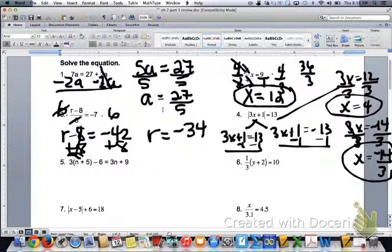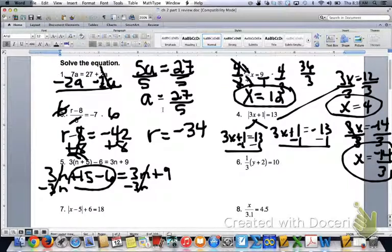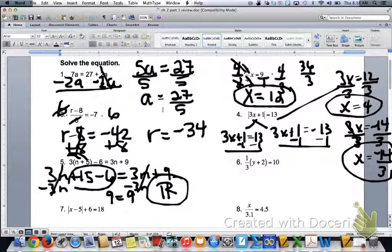Number five, we're going to distribute. That's 3n plus 15. And then you have minus 6 equals 3n plus 9. When we subtract the 3n, because we want to get our variables on the same side, they both cancel. What's left on the left, 15 minus 6 is 9. On the other side is also 9. Since your variables cancel, what's left is equal. Your solution is all real numbers.